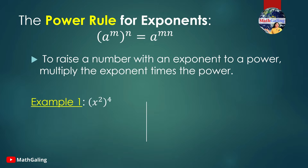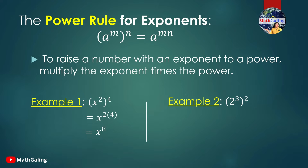Suppose you have x squared raised to the fourth power. This will be equal to — you copy the base x, raised to the 2 times 4. 2 times 4 is 8, and your final answer is x to the 8th power.